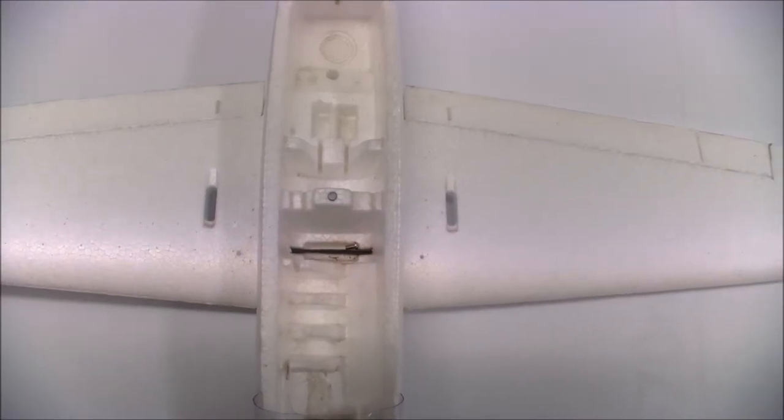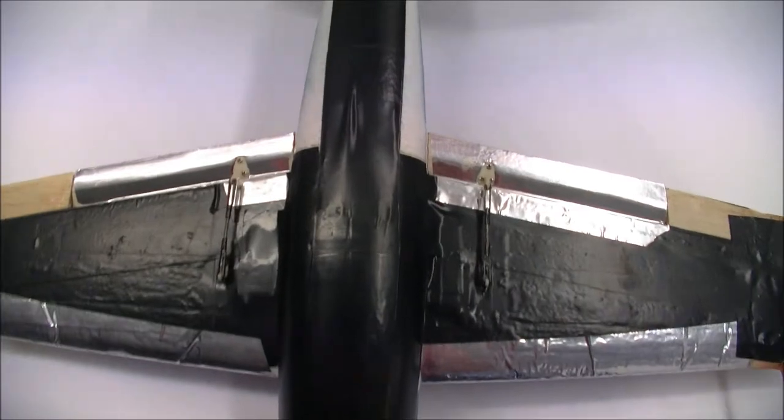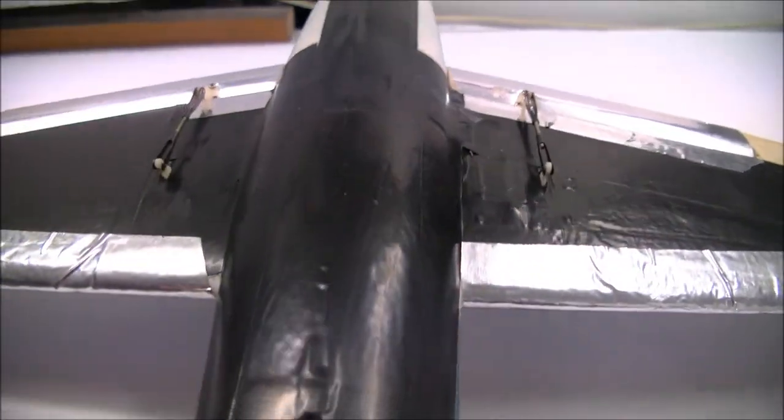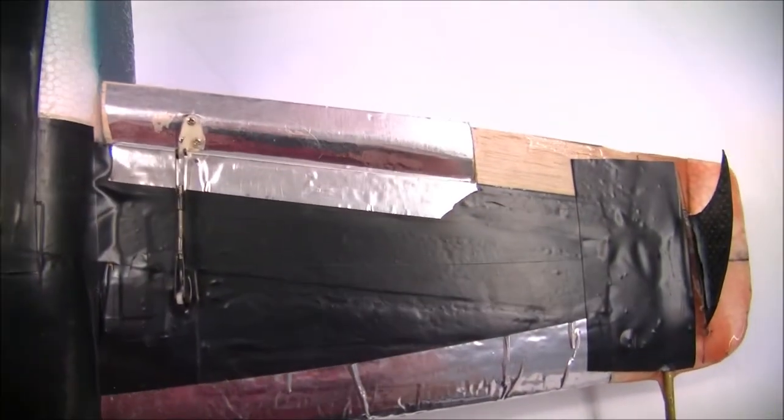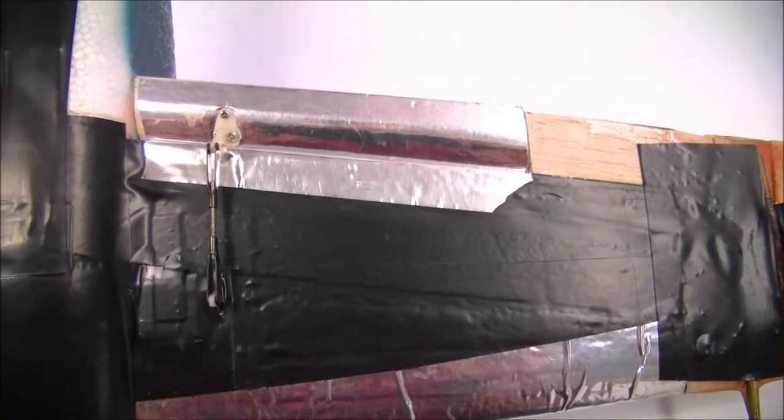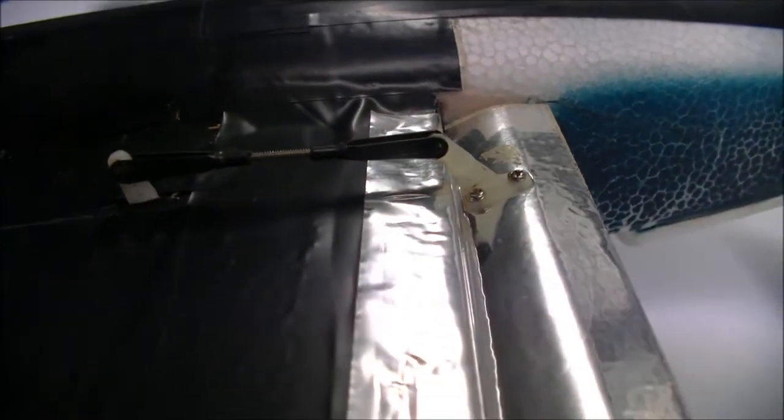On the standard rare bear the aileron push rods are designed to come through the top of the wing. But on the sick bear I've decided to go on the underside like so. I've also used on the trailing edge solid balsa trailing edges and tape for hinges.